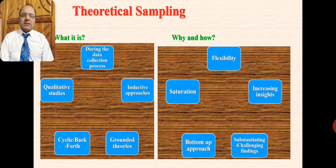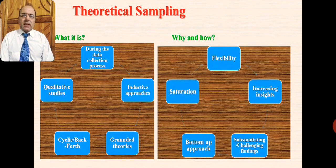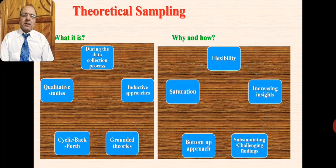It is called theoretical sampling for a reason: during this process, researchers are critically looking at findings and developing theories rather than testing theories — which is what generally happens in quantitative research. Qualitative studies are more inductive in approach, and theoretical sampling is especially relevant to qualitative studies that follow grounded approaches, where the research process is grounded in empirical data.